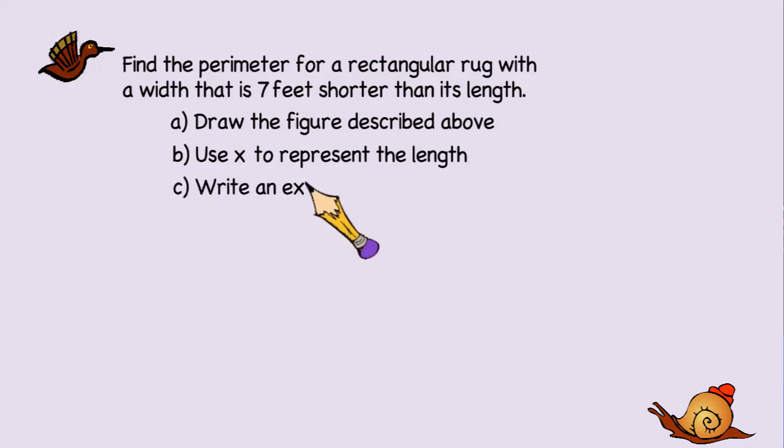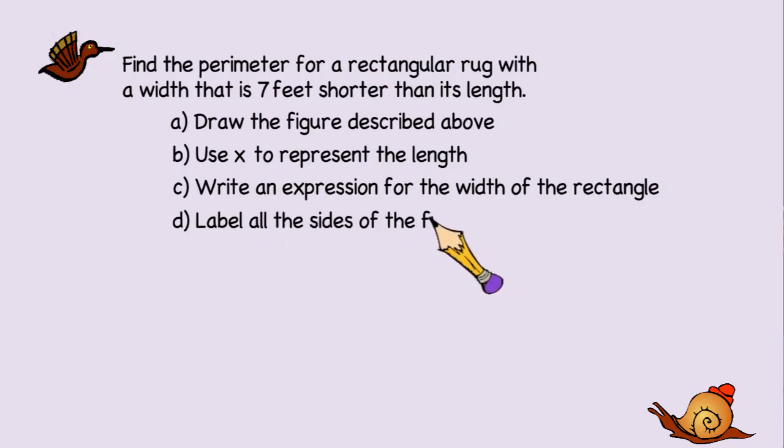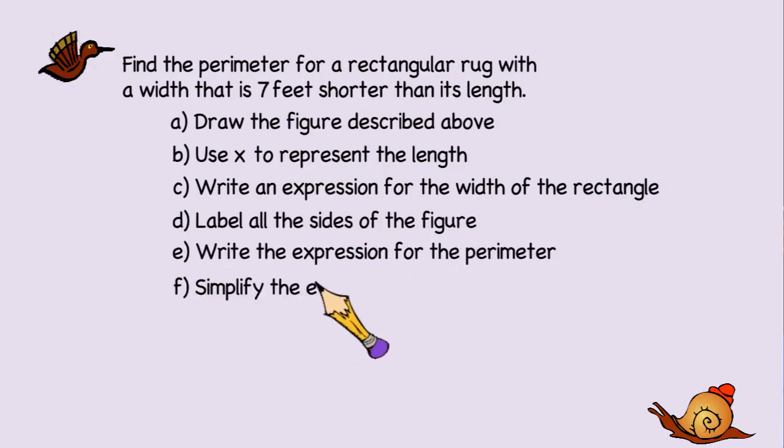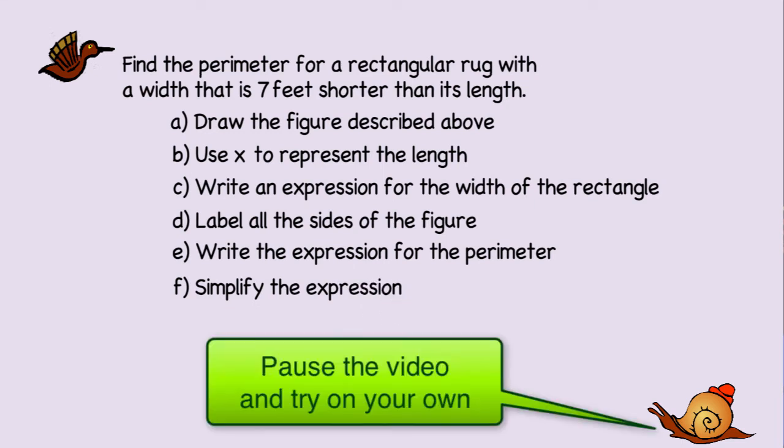After you do that, you want to write the expression for the width of the rectangle. Go ahead and label all the sides of the figure. Write out the expression for the perimeter. And then simplify the expression. Go ahead and pause the video and try the problem on your own. And when you're done, unpause the video and check your work.